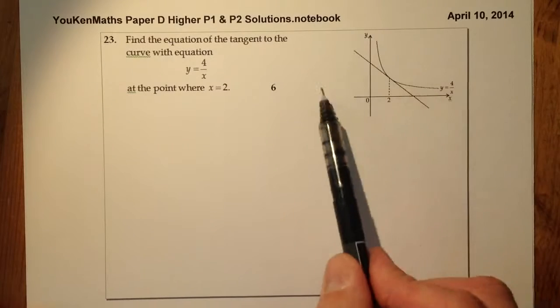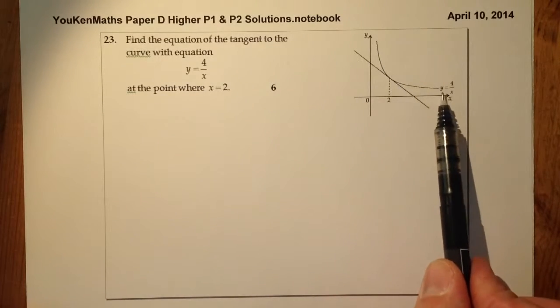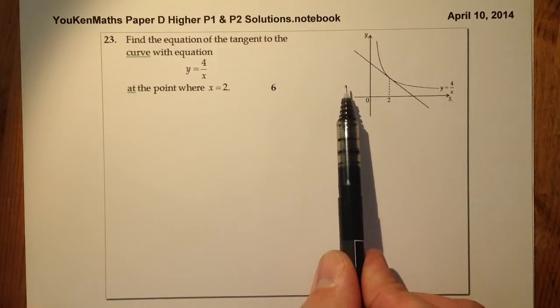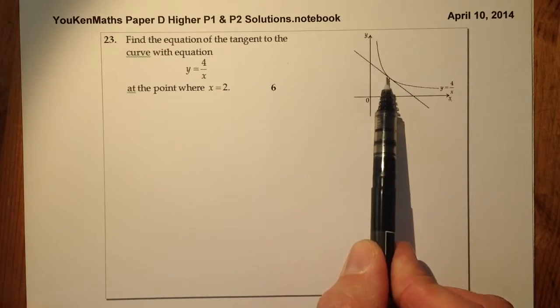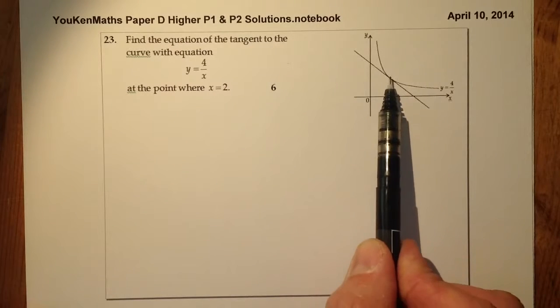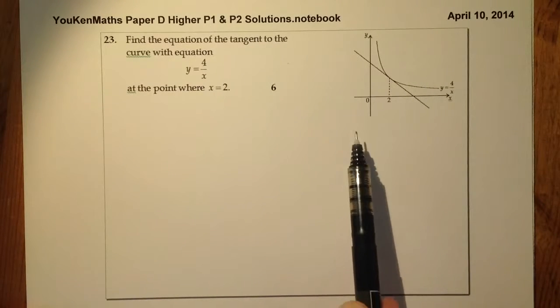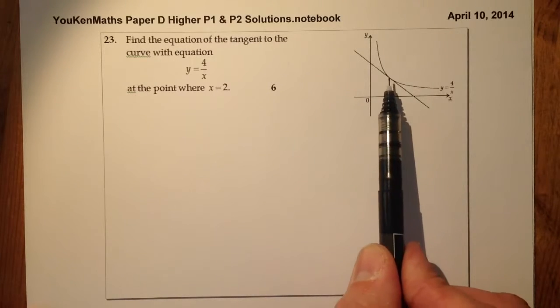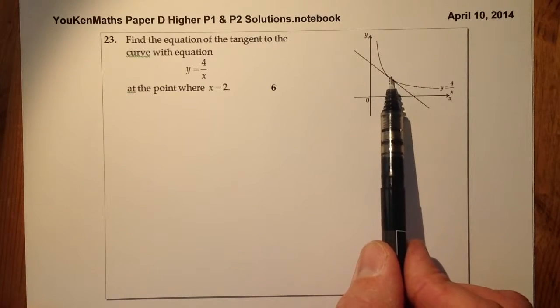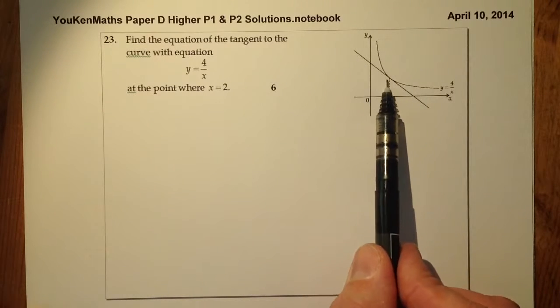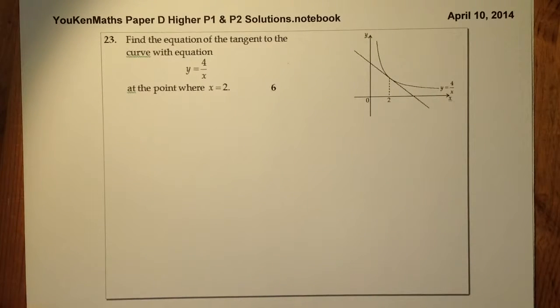So what I can see from the diagram here is we've got the curve here, y is equal to 4 over x. And what we're looking at is the equation of this line that's here, so that will be our tangent just at the point here where x is equal to 2. So two things that I'm really needing to gather here is I'm going to have to gather the point of contact, so I need the y-coordinate of this one here, and also I need the gradient of the tangent that's here.